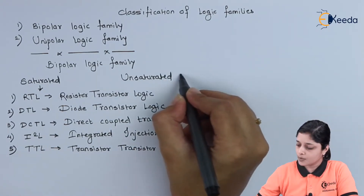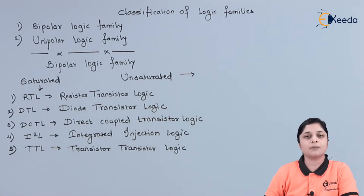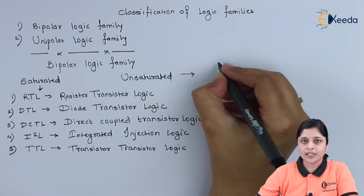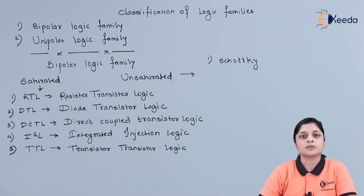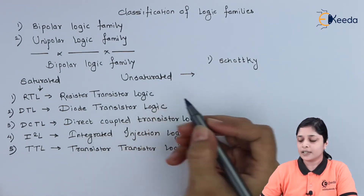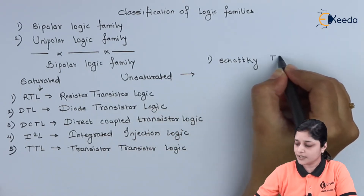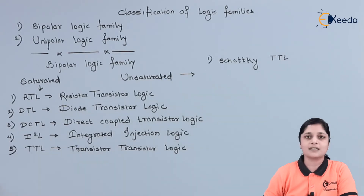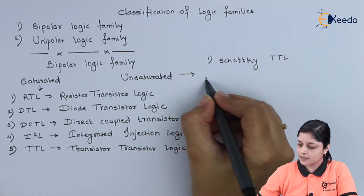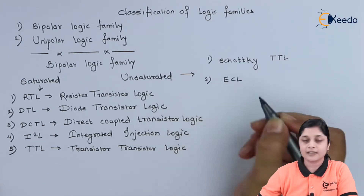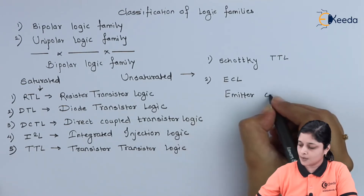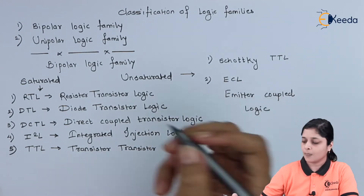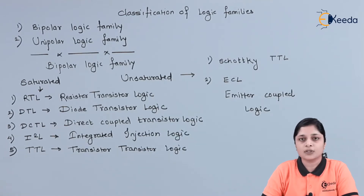Now we will look at unsaturated bipolar logic families. They are divided into two types: Schottky TTL, which stands for Schottky Transistor Transistor Logic, and ECL, that is Emitter Coupled Logic. These are the two types that come under the unsaturated bipolar logic families.